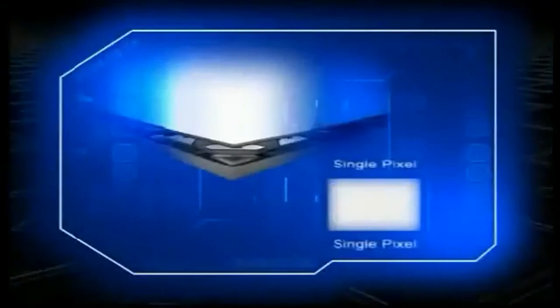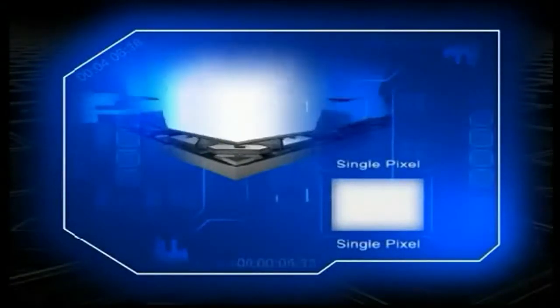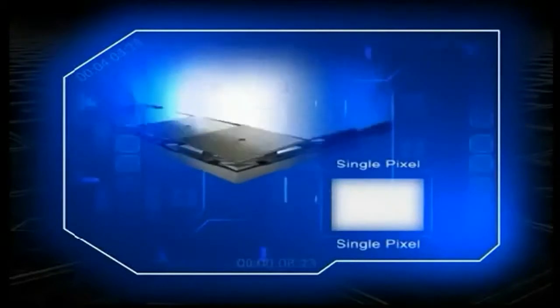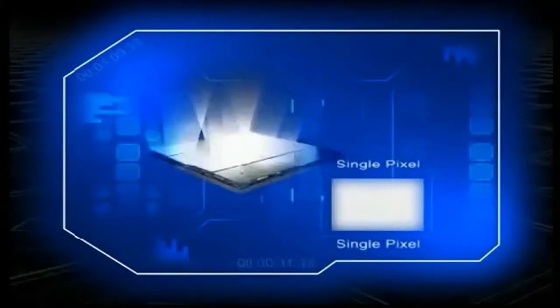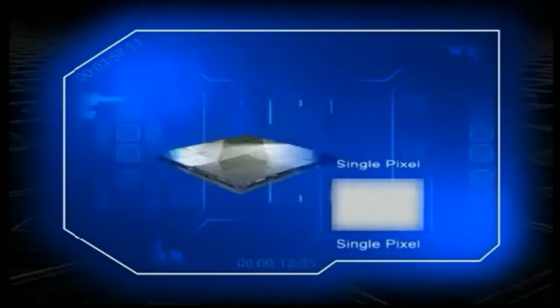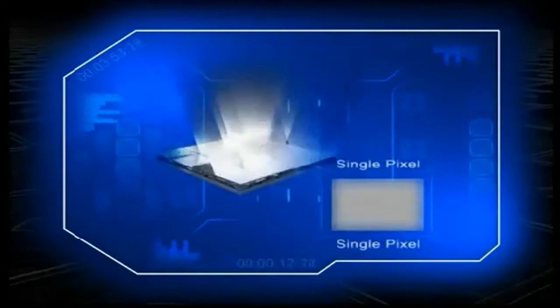Each DMD mirror can be switched on and off thousands of times per second. Varying the amounts of time the mirror spends on and off causes it to reflect different shades of gray. When a mirror is switched on more than off, it reflects a light gray pixel, and when a mirror is switched off more than on, it reflects a dark gray pixel.